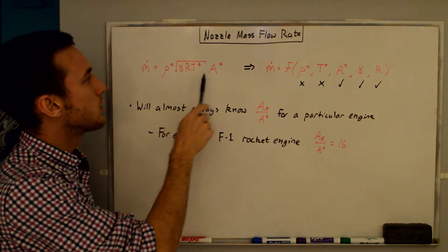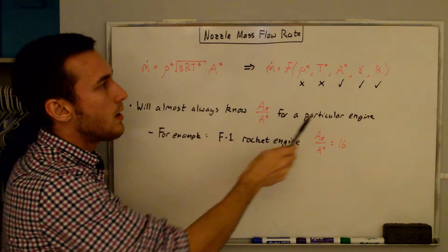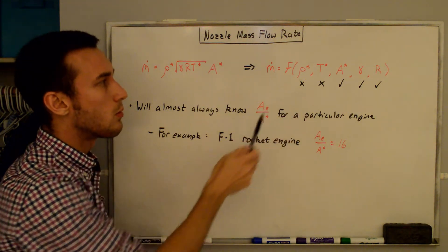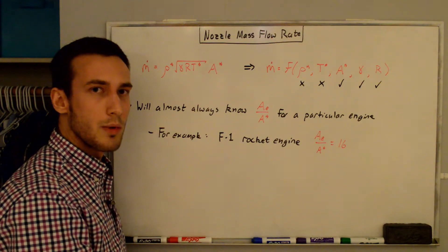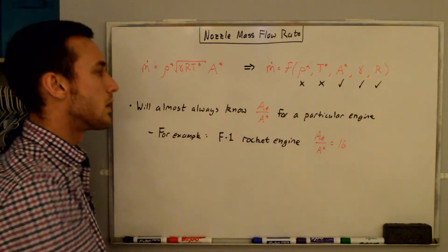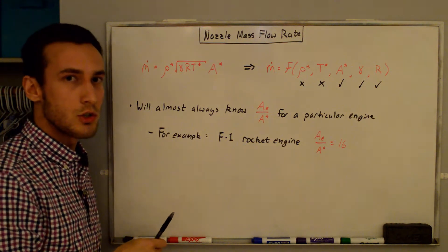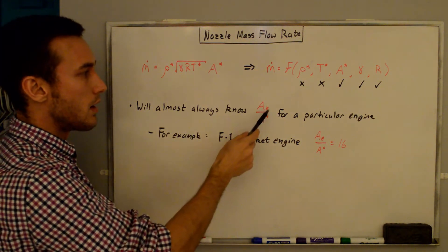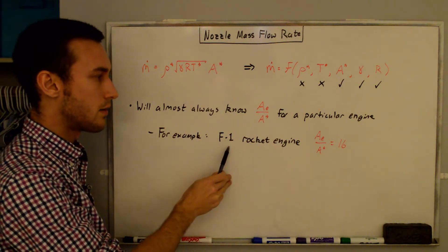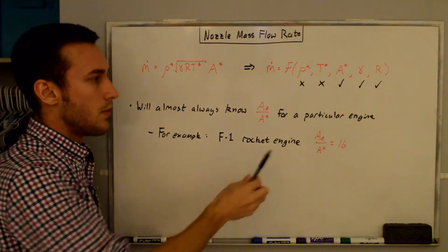Here's the mass flow rate equation: ṁ = ρ* √(γ R T*) A*. It's a function of ρ*, T*, A*, γ, and R. Note that A*, γ, and R are in our final functional form, but ρ* and T* are not — we want those expressed as functions of P₀ and T₀. For γ and R, these are properties of the gas. For A*, we'll almost always know the area ratio A_e/A* for a particular engine. For example, for the F1 rocket engine that powered the Saturn V, A_e/A* equals 16.